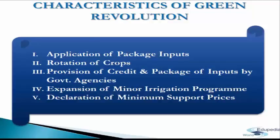The last characteristic is the declaration of minimum support price. In order to motivate farmers regarding genuine and fair prices for their crops, minimum support prices were to be declared well in advance of the sowing season. The basic objective was to prevent large fluctuations in farmers' income and achieve equity.